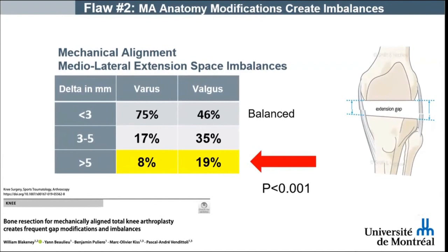The study by Blackney et al. on the calculation of bone resection for mechanical alignment on 1,000 CTs showed that for most knees, using a 90-degree cut reduces femoral anatomic valgus and tibial anatomic varus by a mean of 3 degrees. This study demonstrated that extension space imbalances of 3 mm or more are created for 25% of varus and 54% of valgus knees, and even greater imbalances of more than 5 mm are present in up to 8% of varus and 19% of valgus knees.